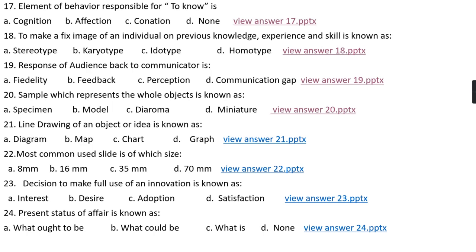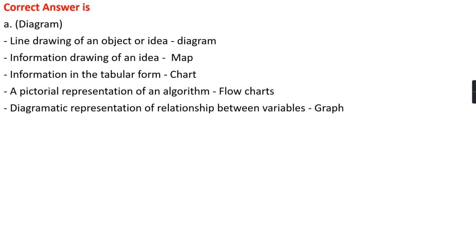Question number twenty-one: Line drawing of an object or idea is known as option A, diagram; option B, map; option C, chart; option D, graph. The right answer is option A, that is diagram. A line drawing of an object or idea is known as a diagram. A map is an informational drawing of an idea. A chart presents information in tabular form, and a flowchart is a pictorial representation of an algorithm. A graph is a diagrammatic representation of the relationship between different variables.